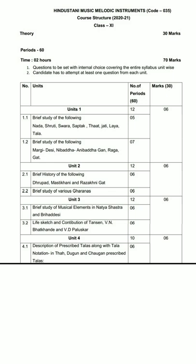We will discuss three parts and marks. We have five units in theory. In Unit 1 we will discuss nots, shruti, swar, saptak, jati, lay, tal, margi, deshi, ragas, nibaddh, anibaddh, and gun. These are all short notes and short descriptions. Six marks will be asked from this unit in the exam.